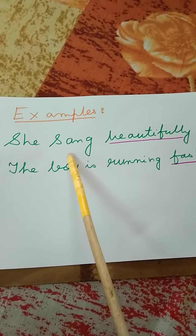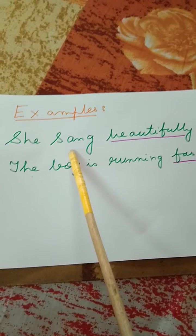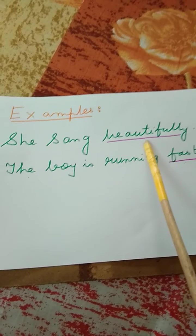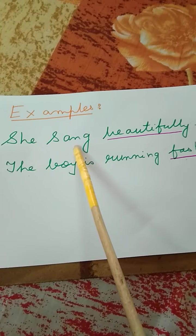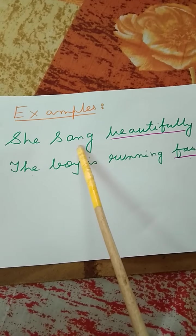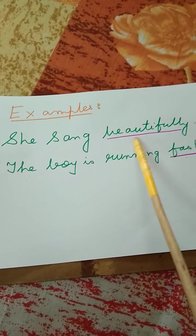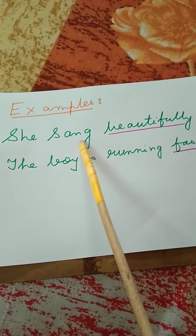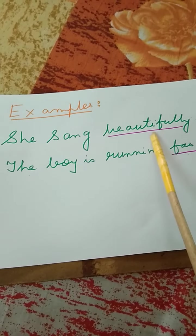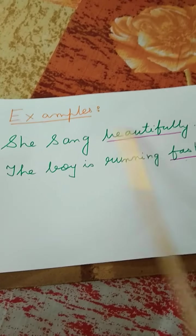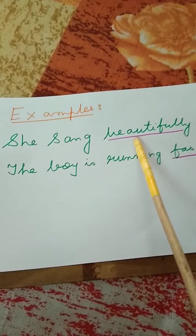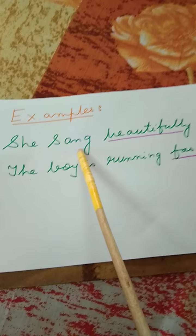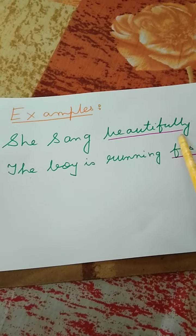Now, 'sang' is a verb — it is an action word. When I am saying 'beautifully,' I am saying something about how the person is singing. 'She sang beautifully' means she is singing a song very beautifully. So I am saying something extra about the verb. So 'beautifully' is the adverb.